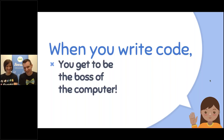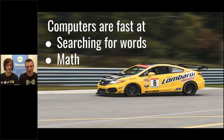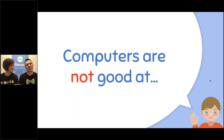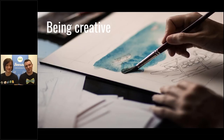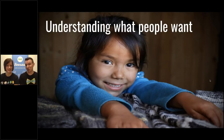The cool thing about writing code is you get to tell the computer what to do — you get to be the boss of the computer. The computer will do exactly what you want it to do, which sometimes you realize isn't exactly what you actually wanted. Computers are great at math and can calculate numbers really quickly, and they're really good at searching for words. But there are some things computers are not good at: one is being creative — computers do not have an imagination. Another is really understanding what's important to a person. So ask yourself what does a person want, not what can the computer do.